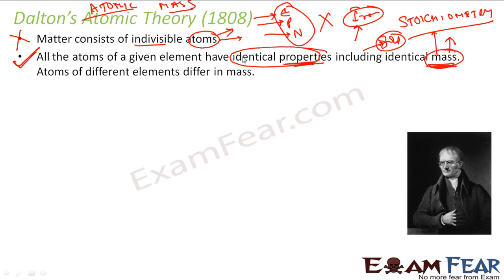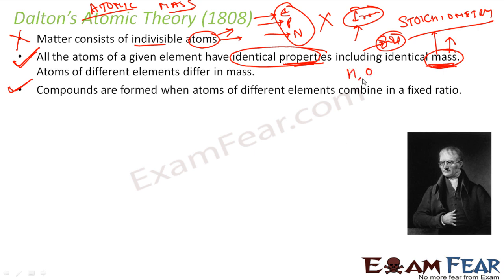Compounds are formed when atoms of two different elements combine in fixed ratio. This is correct today also. So if you take two different elements, for example you take hydrogen and oxygen, you combine in the ratio of two hydrogen and one oxygen, you get water. So there's a compound that you get when atoms of two different elements combine in fixed ratios. All these was part of Dalton atomic theory in 1808.